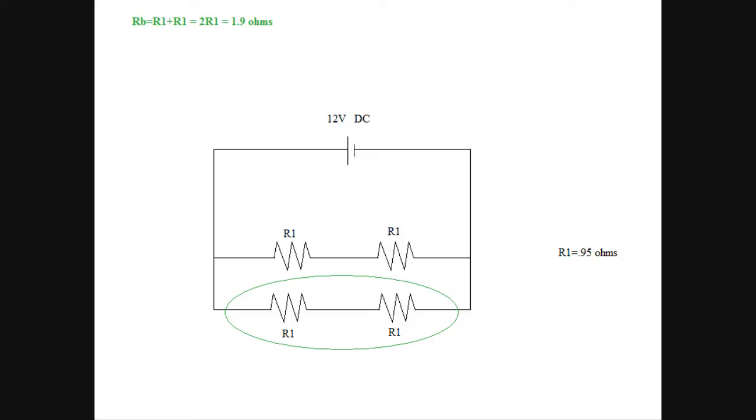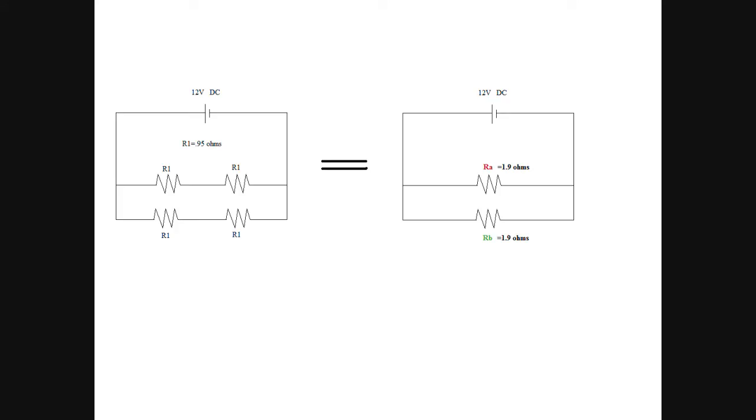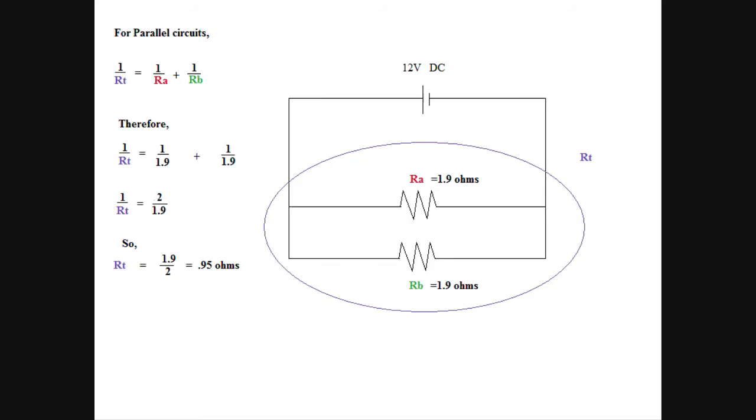Now, we can simplify this and say that on the right side of this picture here, you see I have something labeled RA and RB. RA is 1.9 ohms just like we calculated a second ago and the same thing with RB. To calculate the resistance in parallel, use this formula right here.